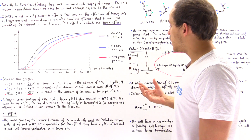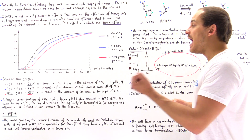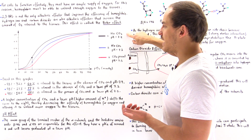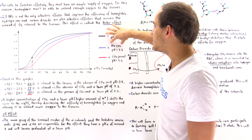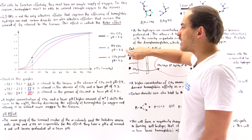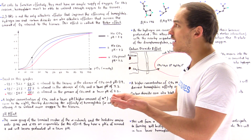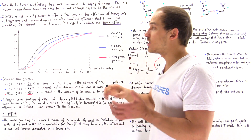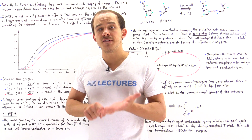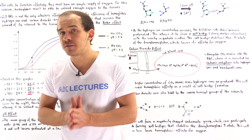The red curve describes the condition with about 40 millimeters of mercury of carbon dioxide present and a pH of 7.2, so an increased hydrogen ion concentration compared to the black curve. When we don't have any CO2 but lower the pH, the black curve shifts to the blue position. When we add carbon dioxide, the blue curve shifts to the red position. Together, hydrogen ions and carbon dioxide create the Bohr effect, shifting the oxygen binding curve to the right, decreasing hemoglobin's affinity for oxygen and allowing it to release more oxygen to the tissues.